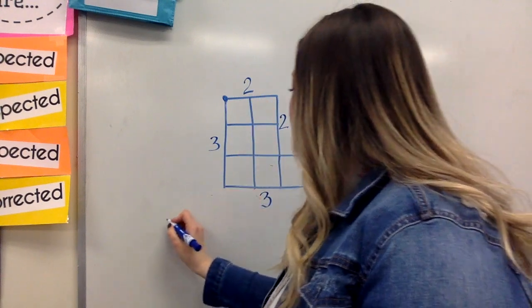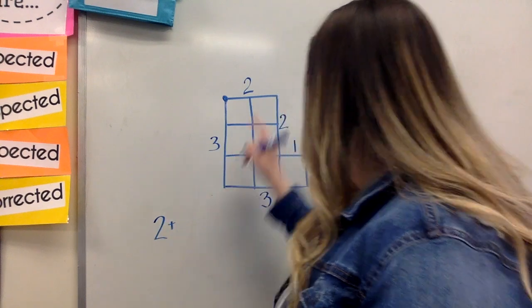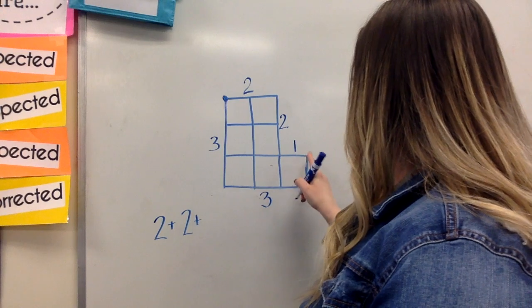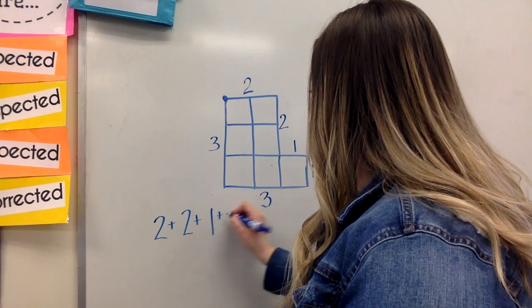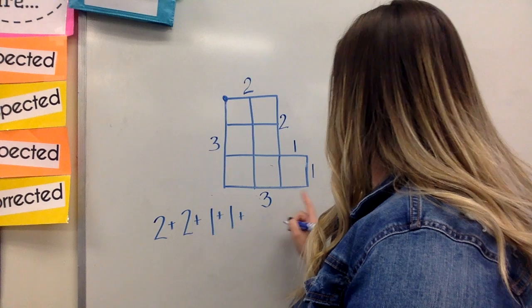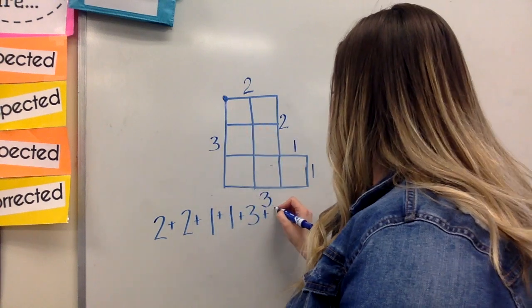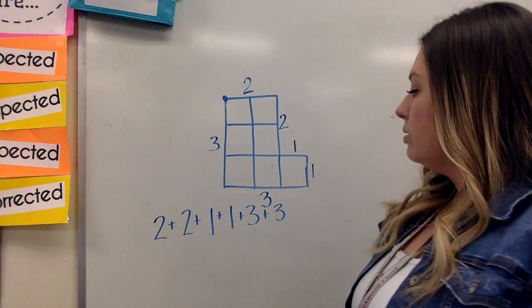So I have two to start off with, two for my next one, then I have one, I have another one, then I have my three, and I have my last one, one more three.